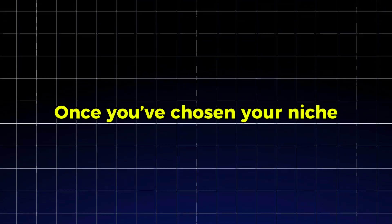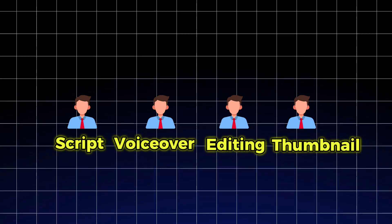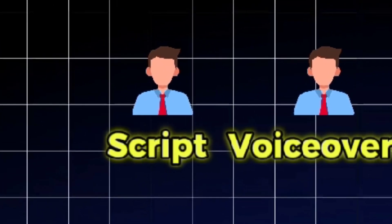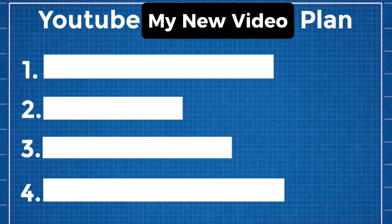Once you've chosen your niche, the next step is building your team. This is where YouTube automation really shines because it's all about delegating tasks to skilled professionals. By building a skilled and reliable team, you set the foundation for a streamlined YouTube automation process. To maximize the script writer's efficiency, provide them with a detailed brief for each video — include the topic, target audience, tone, and key points you'd like covered. Regular feedback is crucial to help them refine their style to align with your brand voice.